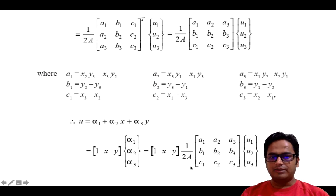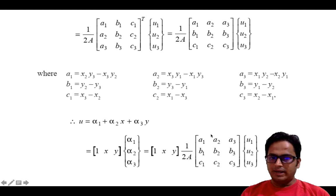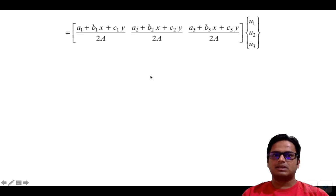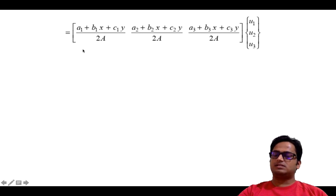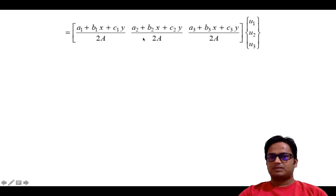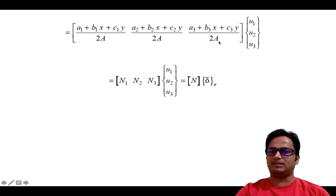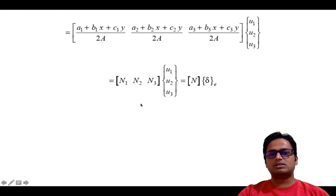After performing the multiplication — for example, 1·a1 plus x·b1 plus y·c1 — and completing all multiplications, we get the three shape function components. The first component is (a1 plus b1·x plus c1·y) / 2A, the second is (a2 plus b2·x plus c2·y) / 2A, and the third is (a3 plus b3·x plus c3·y) / 2A. These are the shape functions N1, N2, and N3 of the constant strain triangle.